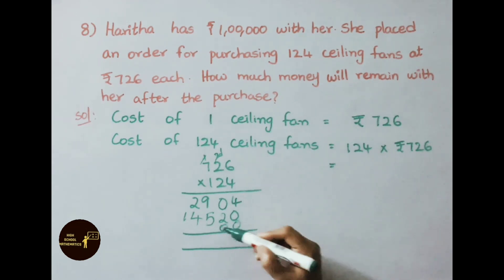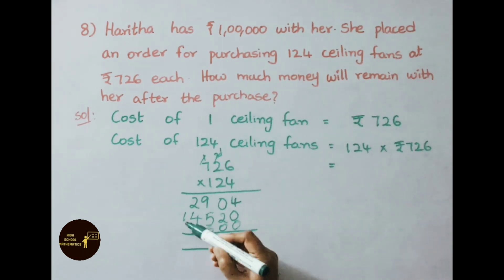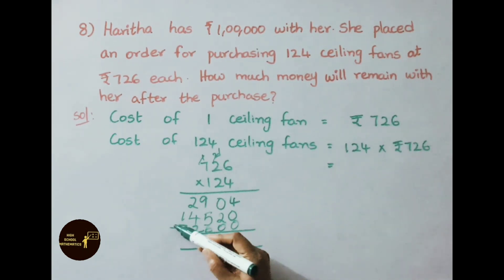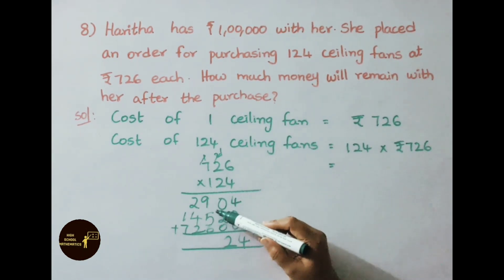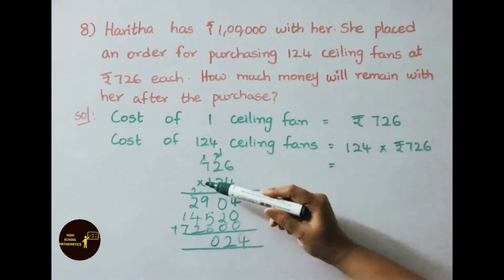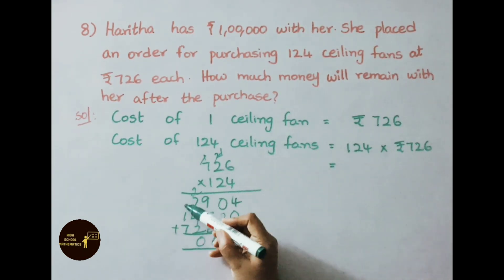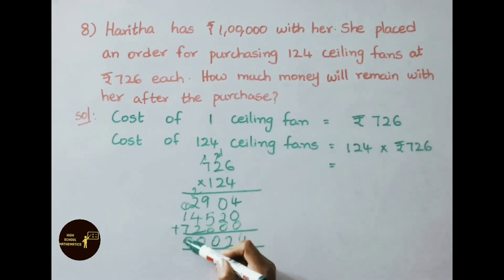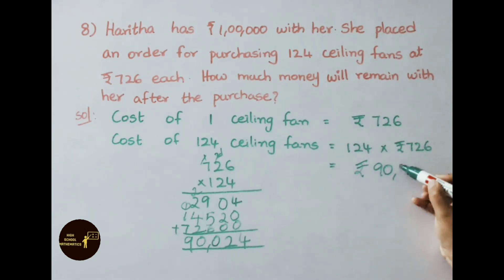Now multiply with 100s place number 1. Place here 2 zeros. Now multiply with 1. 1 times 6 is 6, 1 times 2 is 2, 1 times 7 is 7. Now add all the numbers. 4, 0 plus 2 plus 0 is 2, 9 plus 5 is 14, 14 plus 6 is 20, so 0 carry 2. 2 plus 2 is 4, 4 plus 4 is 8, 8 plus 2 is 10, so 0 carry 1. 7 plus 1 is 8 plus 1 is 9. So the answer is 90,024.